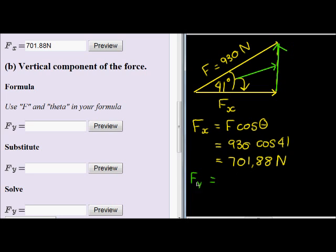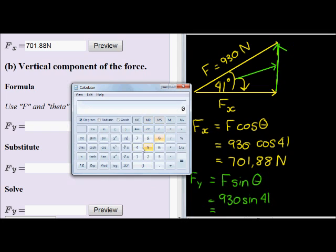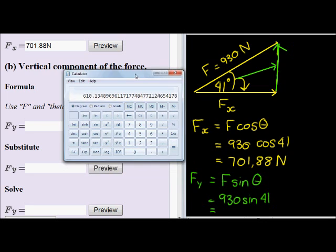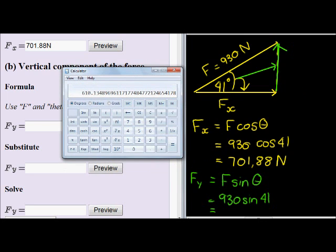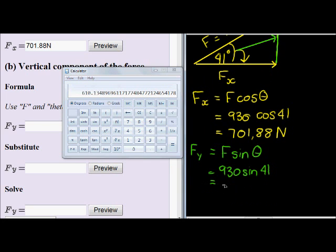So the Y component is F sine theta. We now substitute, and when we solve that using our calculator, 930 times sine 41. There we go. The component in the vertical direction is 610.13, so 610.13 N.